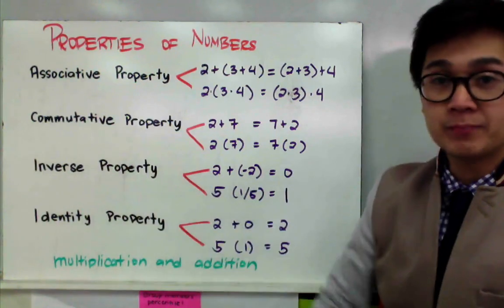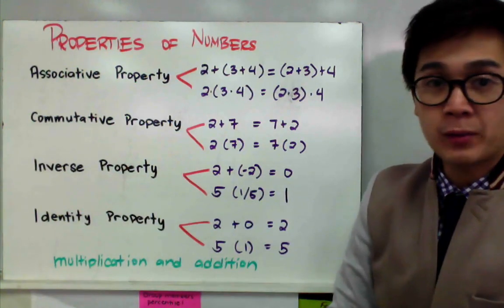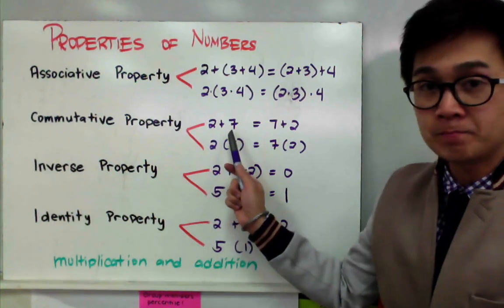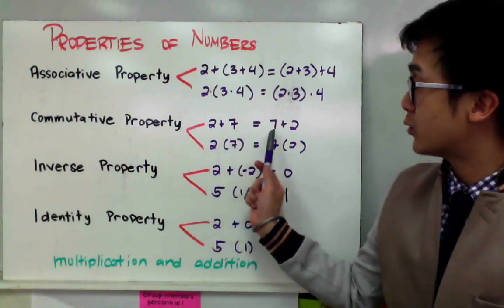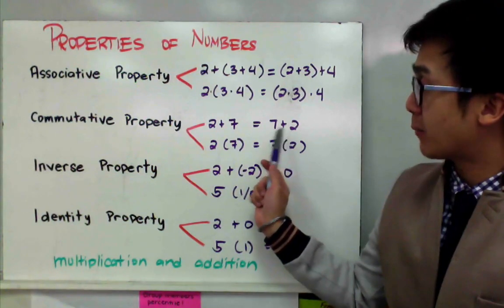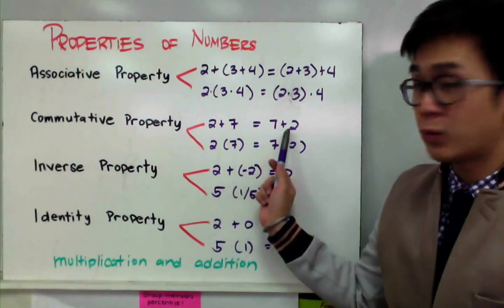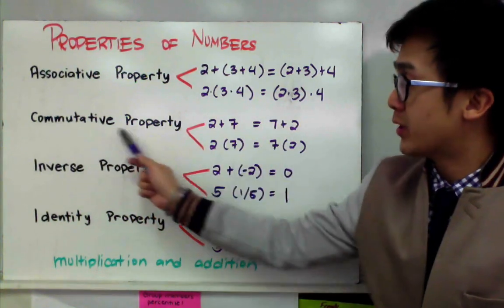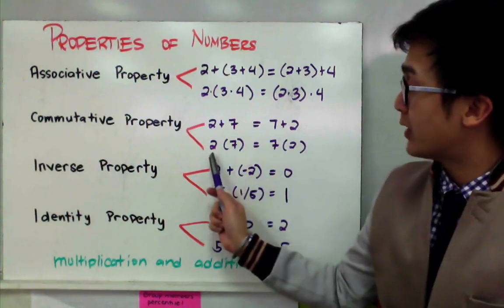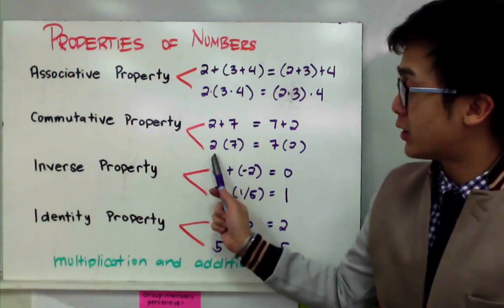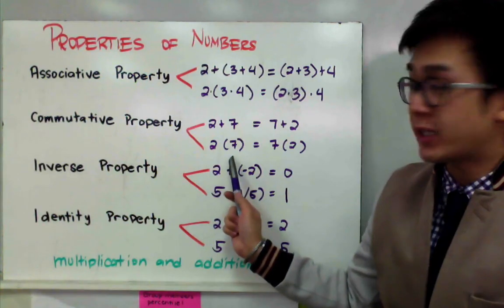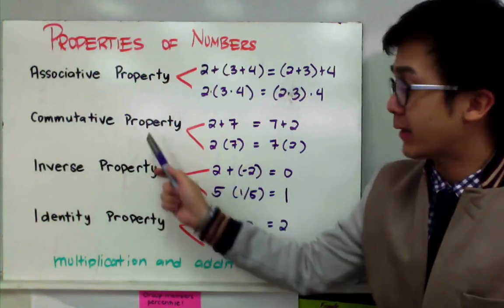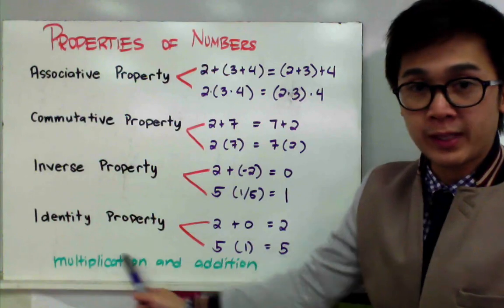The commutative property is similar to the associative property, but this time we're just focusing on two numerical values. So if you have two plus seven and you change its position to seven plus two, your answer will still be the same — two plus seven is nine and seven plus two is still nine. So the value is not changing; therefore, the commutative property is taking place. It's also true for multiplication: if you have two times seven and you interchange two and seven, it will still give you the same answer of 14.